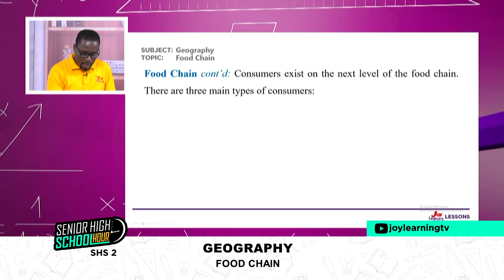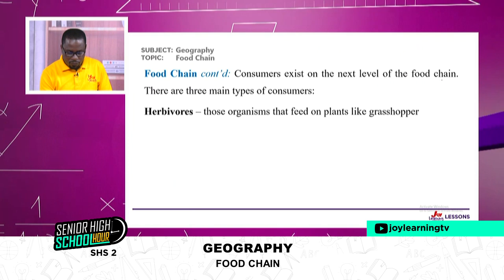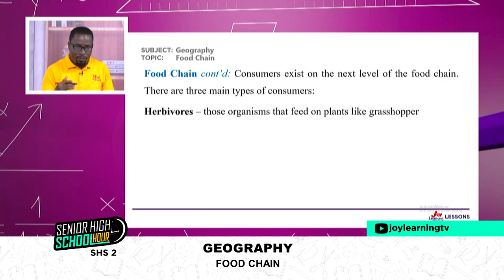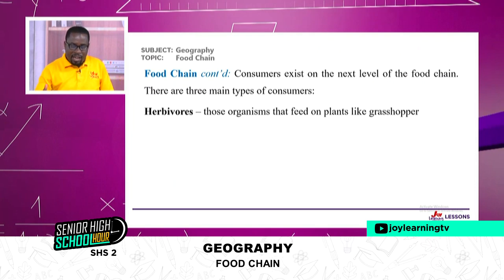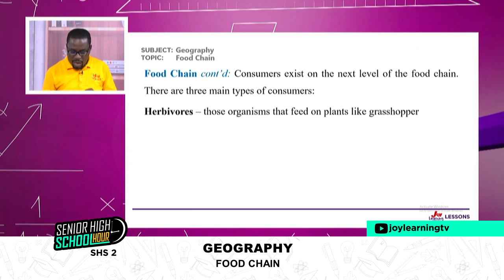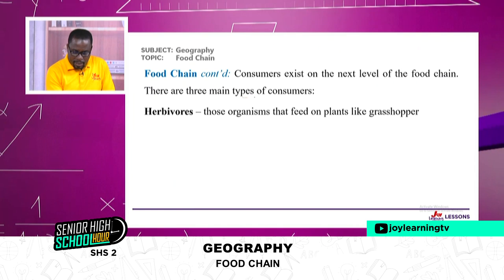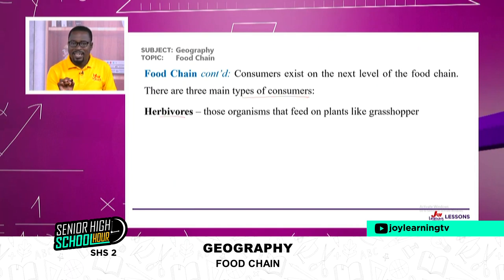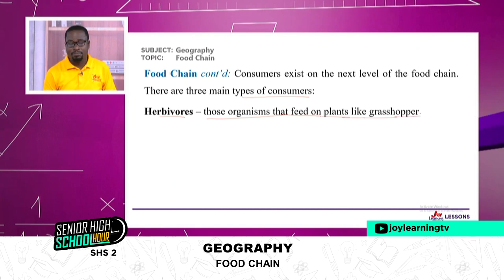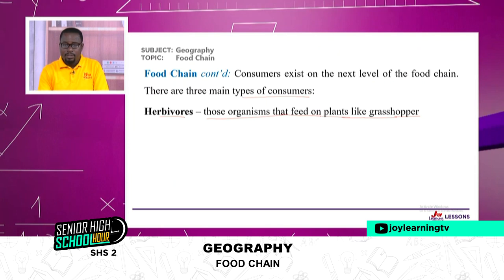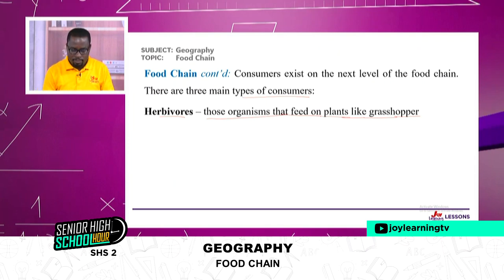Consumers exist on the next level of the food chain — after the producers, after the plants have produced their food, the next level in terms of the food chain we have consumers, those who consume. We have three main types of consumers. We have herbivores — the H is silent, so we say 'herbivores' — and these are those organisms that feed on plants, like the grasshopper. The grasshopper feeds on plants, so the grasshopper is described as an herbivore.